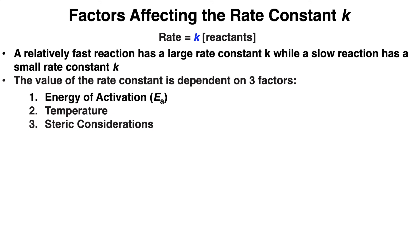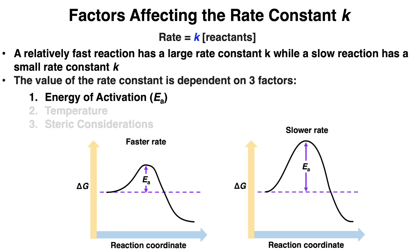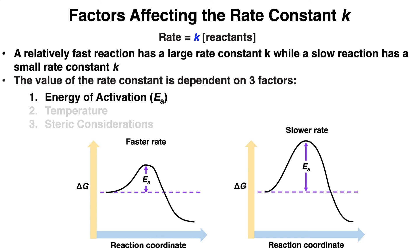There are several factors that affect the rate constant k. A relatively fast reaction has a large rate constant k, while a slow reaction has a small rate constant k. The value of k is dependent on three factors: energy of activation, temperature, and steric considerations. Energy of activation is the amount of energy from reactants to the peak of the hump in an energy diagram — a faster reaction has a small activation energy barrier, while a slower reaction has a larger activation energy barrier. In summary, kinetics studies the rate or speed of a reaction, seen as the height of the activation energy barrier, while thermodynamics determines the equilibrium between reactants and products.